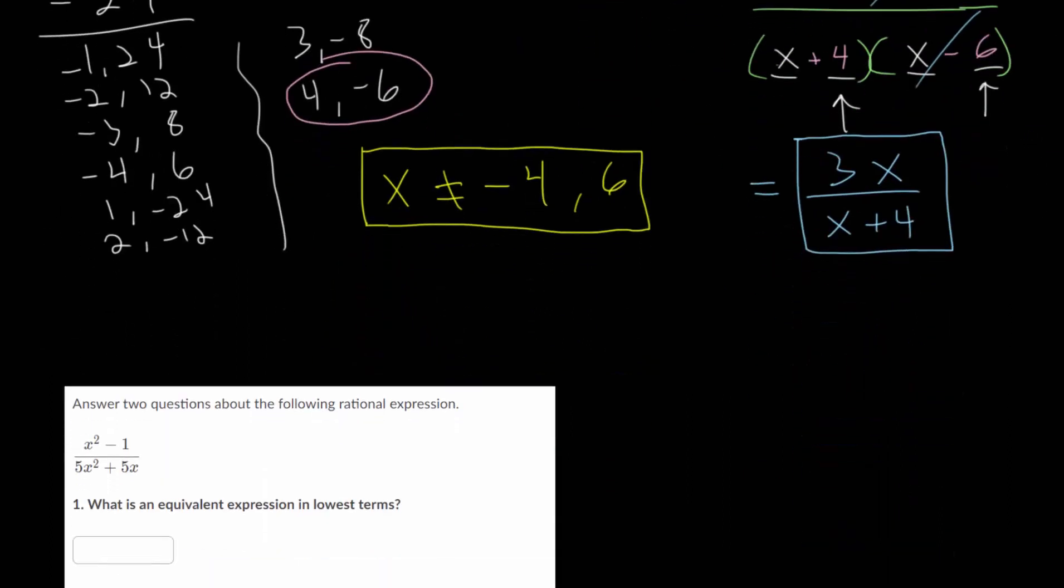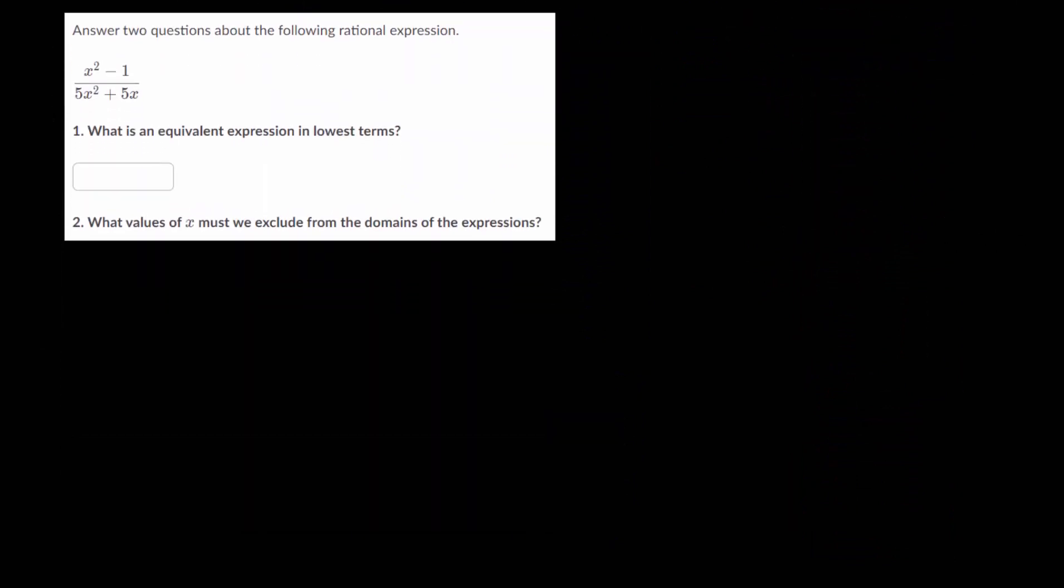Let's do one more of these problems. Again we'll just rewrite this and factor the numerator and denominator. Notice the numerator is a difference of squares, x squared minus 1 squared. We can rewrite that as x minus 1 times x plus 1. It's the first one minus the second one ignoring the squares, multiplied by the first one plus the second one.